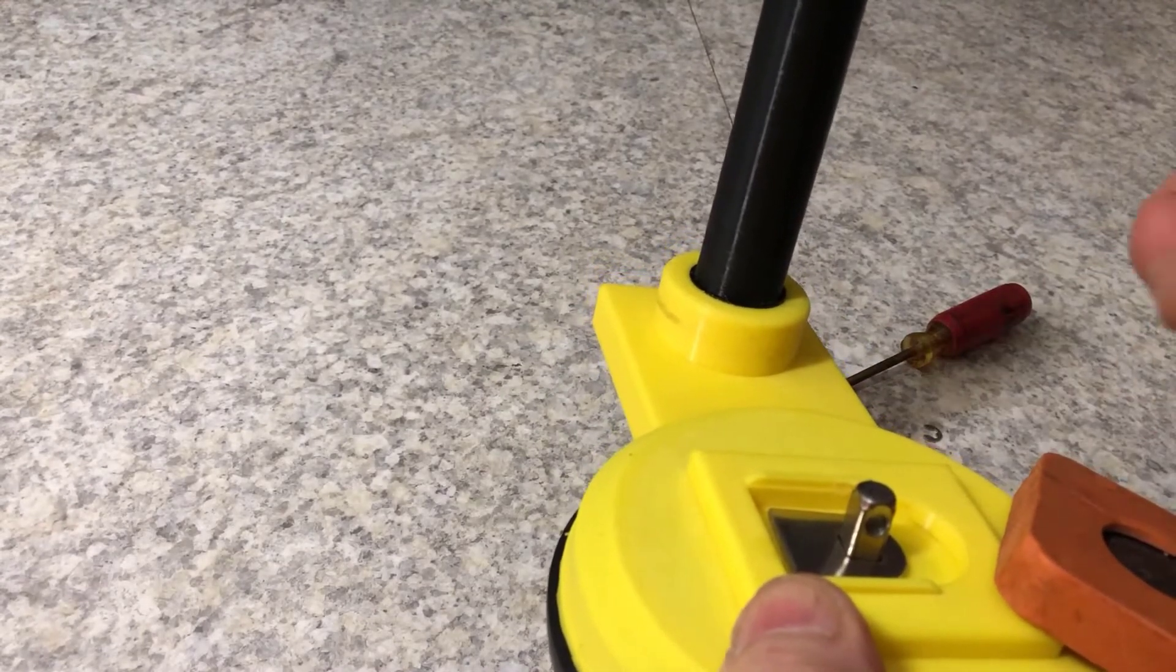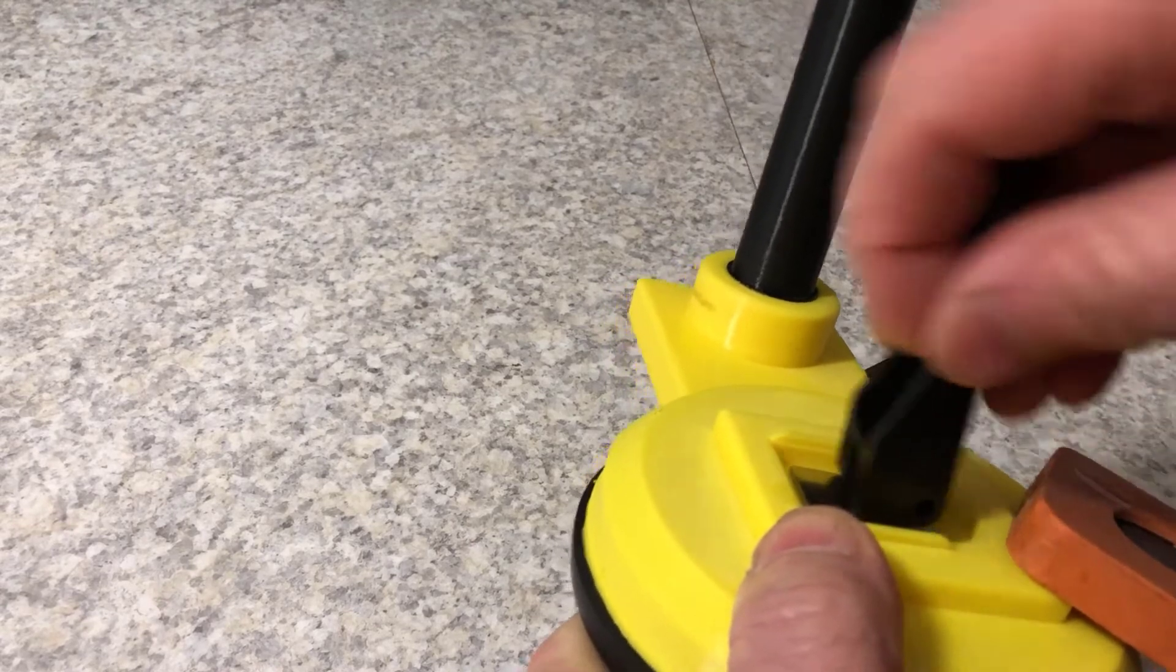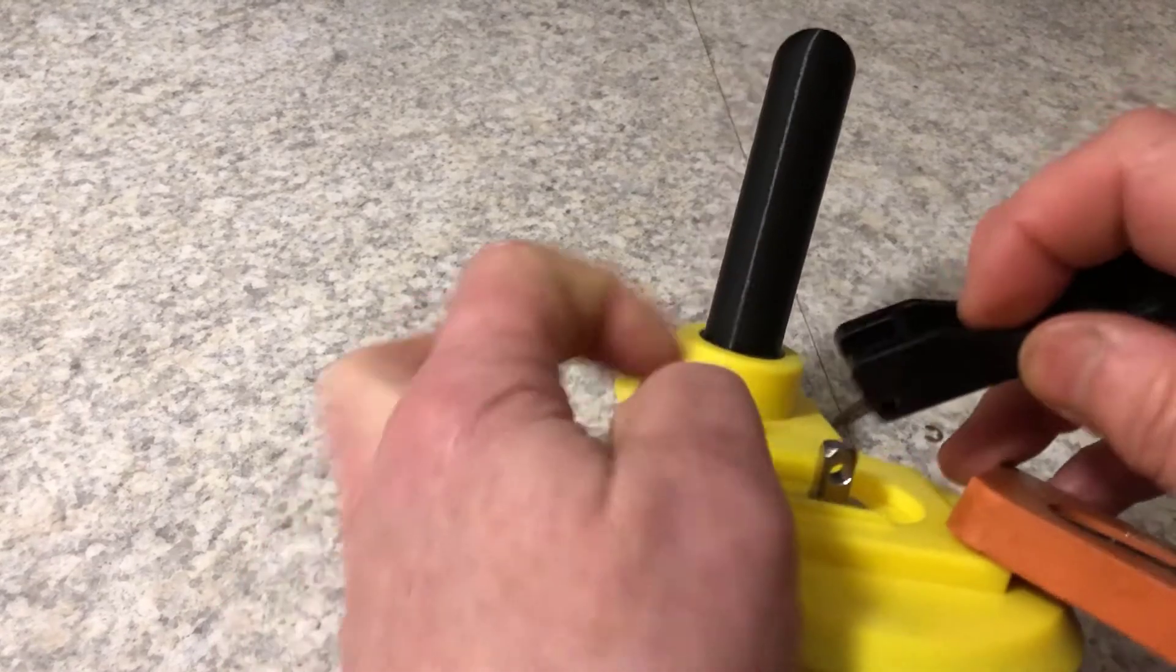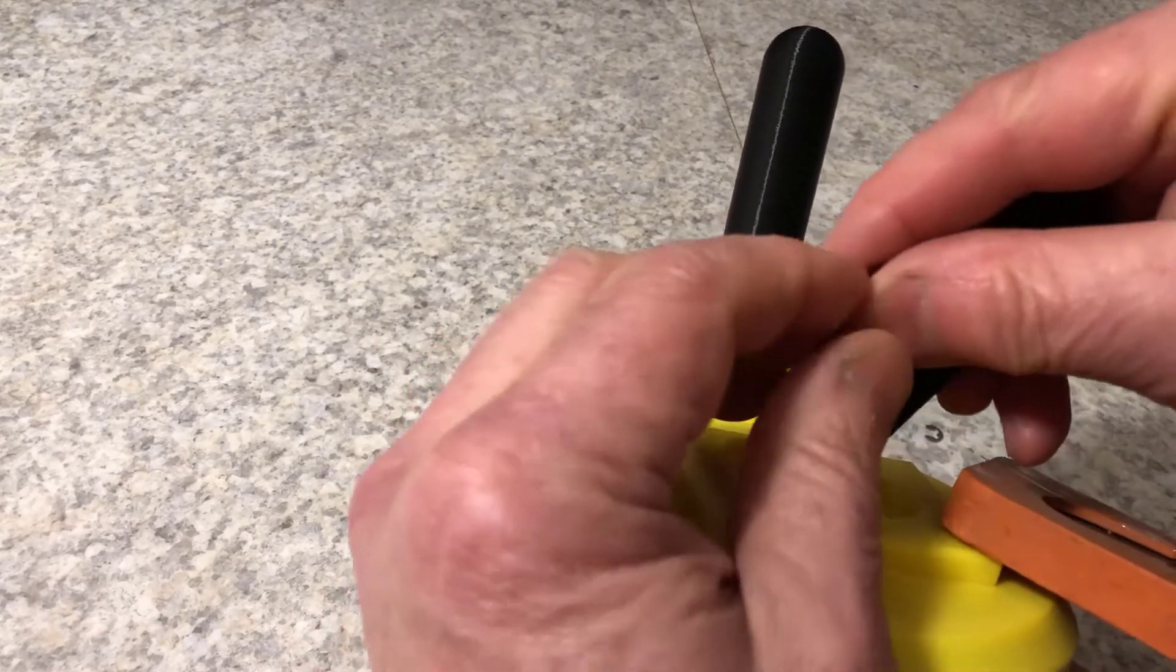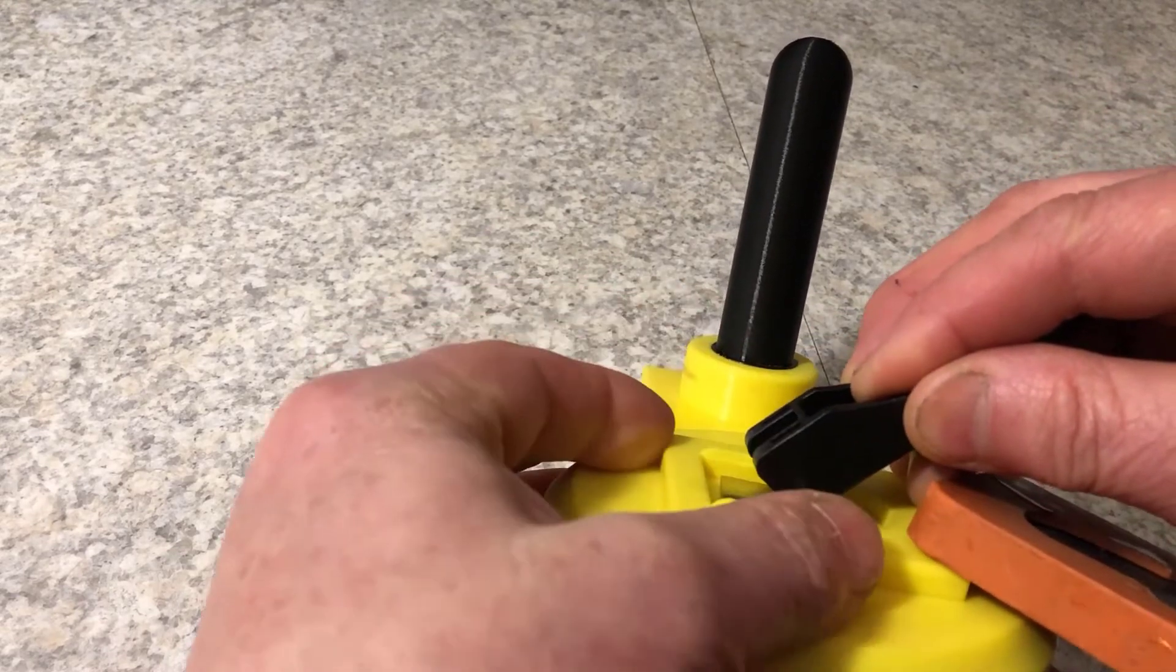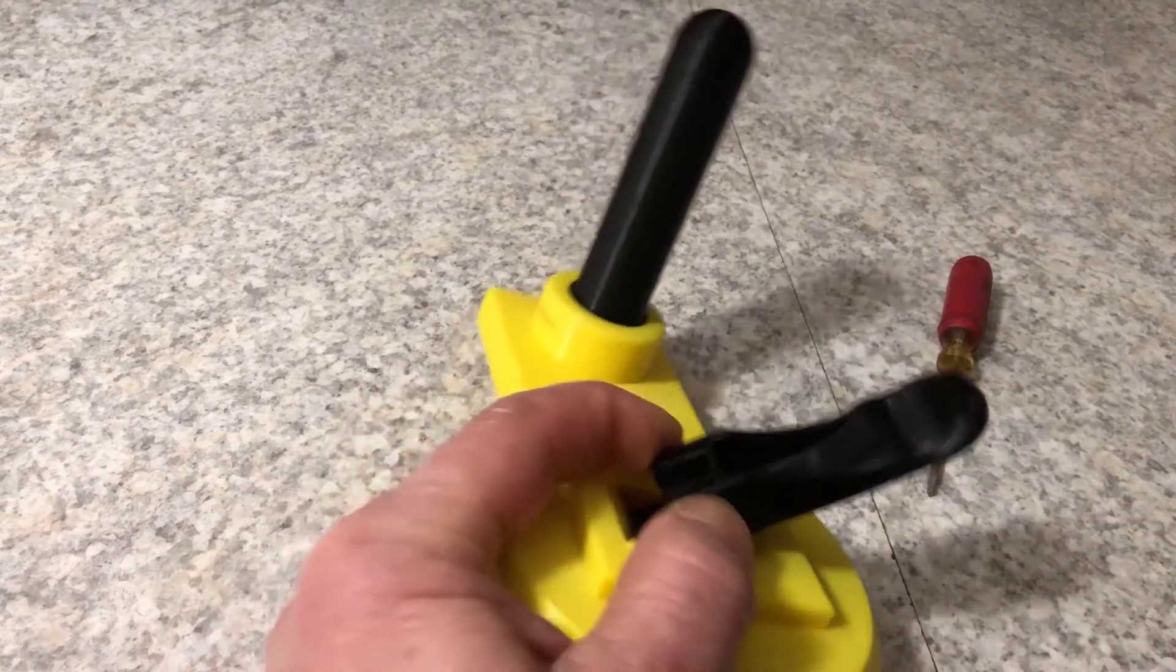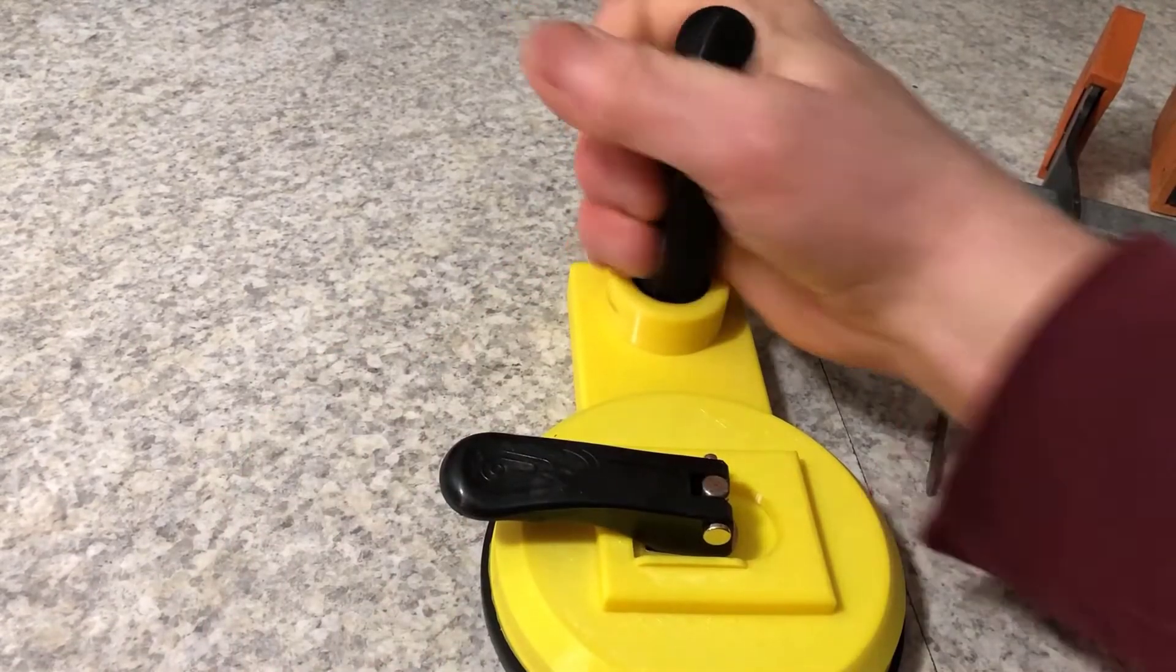This handle will go this way. So we want to make sure that we orient the handle properly and put the pin in. We'll see if we can do this in a reasonably swift fashion. Sometimes starting it before you get the whole assembly together, you kind of feel it in there. We can check it. Make sure that we didn't make a mistake. Clamp her down. There she is.